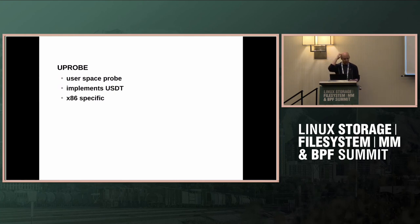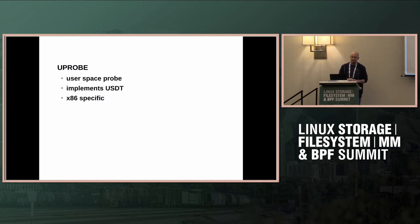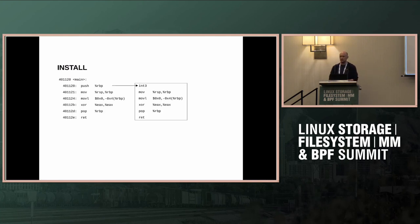A uprobe — user space probe — basically works like this: the interface is that you have the inode and the offset to the file where you put a probe. When the application runs and goes through that point, it will hit the probe and execute whatever is attached — in our case the BPF program. It's also how USDT user space trace points are implemented, using the uprobe. This presentation covers x86 only as a disclaimer.